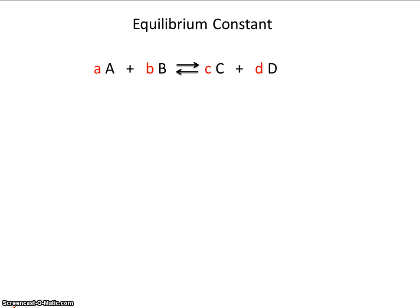In this video, I'm going to introduce a way to quantify whether a reaction is product-favored or reactant-favored. The way to quantify that is something called an equilibrium constant.